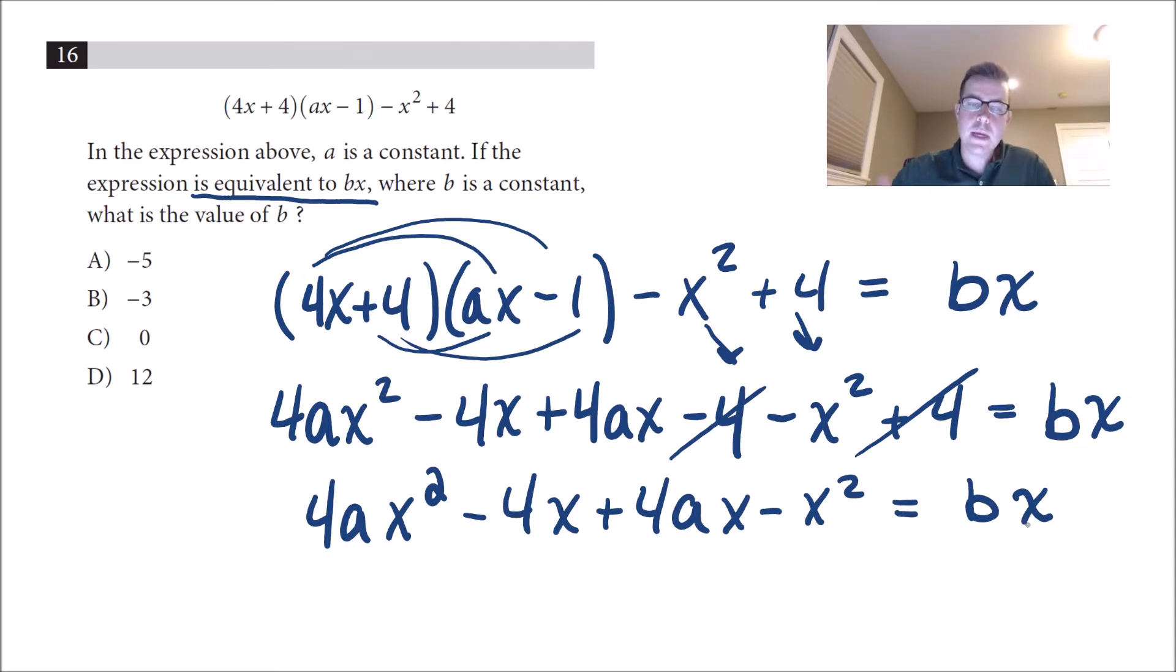Now, I want you to notice here that we need both sides to be equal. But my left hand side has x squared terms on it. So it has a 4ax squared, and it has a minus 1x squared. But if I need that to be equal to my right hand side, I need those to become zero because this is really like bx plus 0x squared. So I need the left side to equal the right hand side.